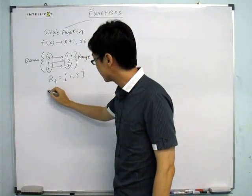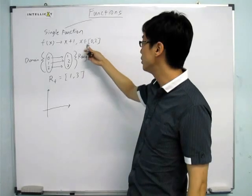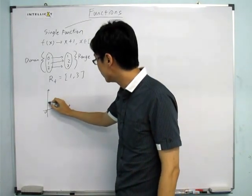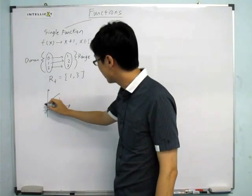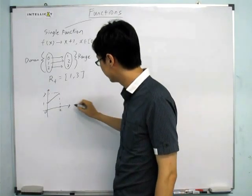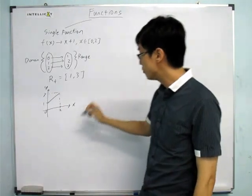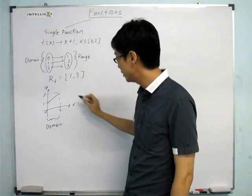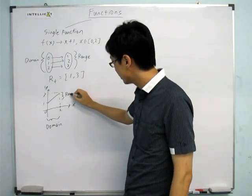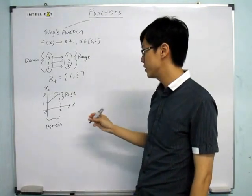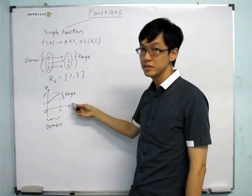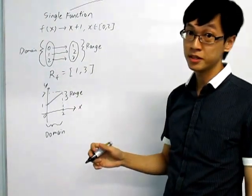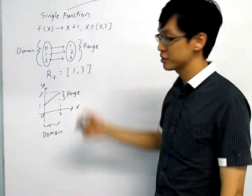If we sketch out the graph, the domain is only between 0 and 2, so you need to sketch the graph between 0 and 2 — nothing less, nothing more. At x = 0 you get 1, and at x = 2 you get 3. The domain is part of the x-axis, and the range — 1 to 3 — is part of the y-axis. Domain belongs to part of the x-axis, and range belongs to part of the y-axis. This is for single functions — you should have learned this at your own level. Just a simple recap.